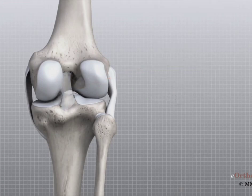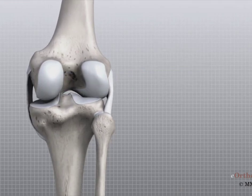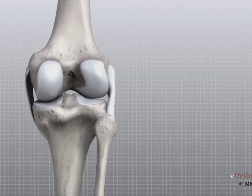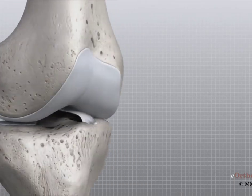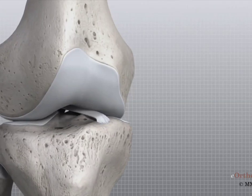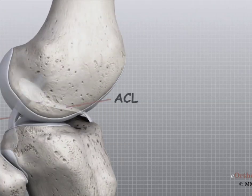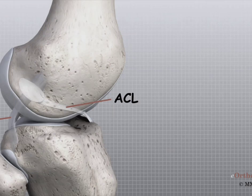The MCL and the LCL prevent the knee from moving too far in the side-to-side direction. The ACL and the PCL control the front-to-back motion of the knee joint. The ACL keeps the tibia from sliding too far forward in relation to the femur, while the PCL keeps the tibia from sliding too far backward. Working together, the two cruciate ligaments control the back and forth motion of the knee. Taken all together, the ligaments are the most important structures controlling the stability of the knee.